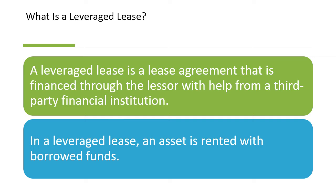What is a leverage lease? A leverage lease is a lease agreement that is financed through the lessor with the help from a third-party financial institution. There are two parties — the lessor and lessee. The lessor purchases the equipment for the lessee with the help of a financial institution. In a leverage lease, an asset is acquired with borrowed funds.